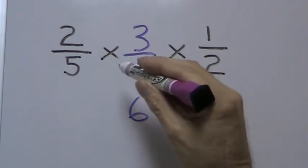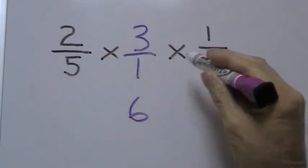We then move down to our denominators, 5 times 1 is 5, times 2 is 10.